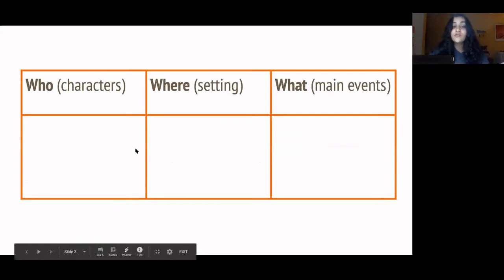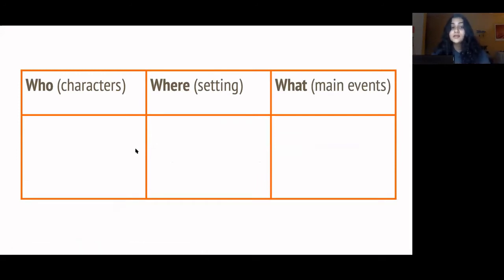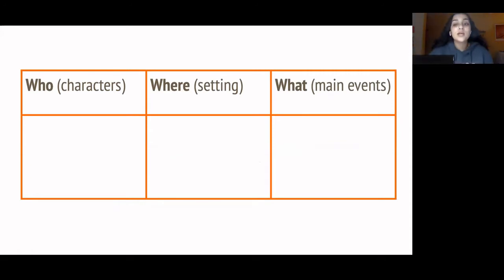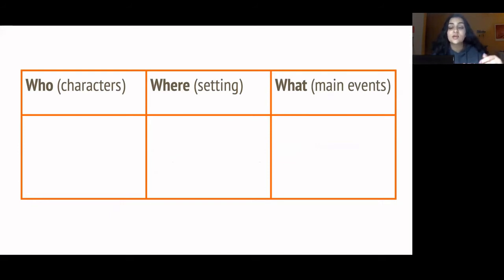I'm going to show you guys a chart that we're going to fill in as we read the poem. Poetry in the SHSAT can be a little bit confusing — sometimes the plot isn't that clear, and it's one of the harder types of passages. A chart like this can help you keep track of what's going on. This chart has three columns: the Who column, the Where column, and the What column. We're going to use Who to track characters, Where for settings, and What for main events. In my opinion, poetry is the hardest type of passage on the SHSAT.